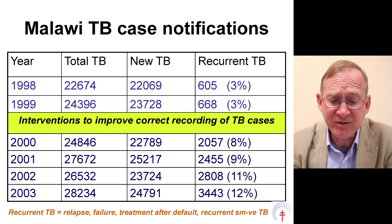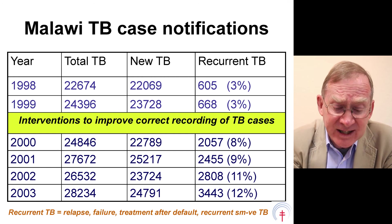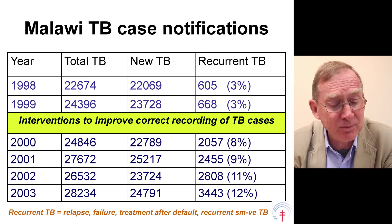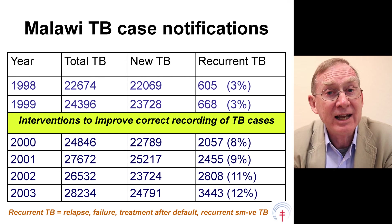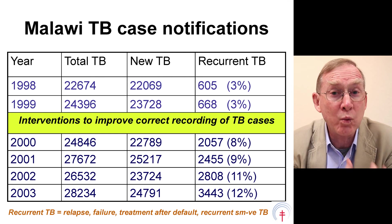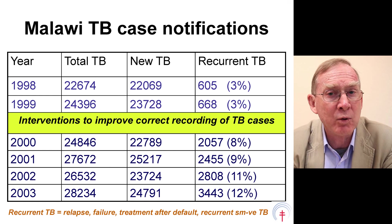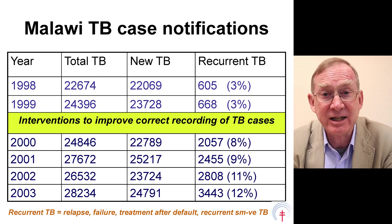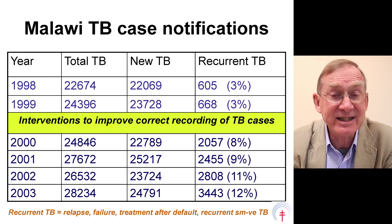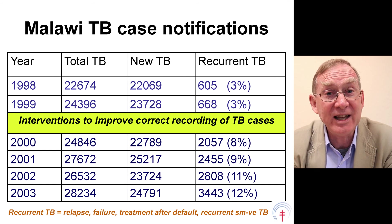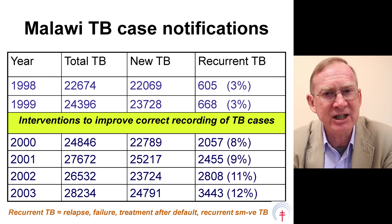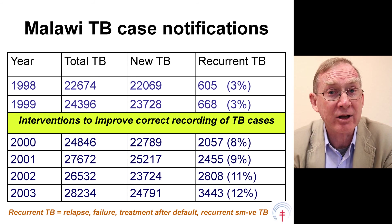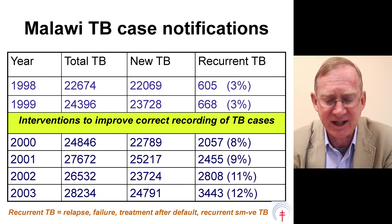This shows that very simple research asking a very simple question and collecting very simple data can have a marked impact on how a country like Malawi reports more accurately on its TB data. And of course, these TB data feed to the World Health Organization, meaning their global TB reports are more accurate in turn.